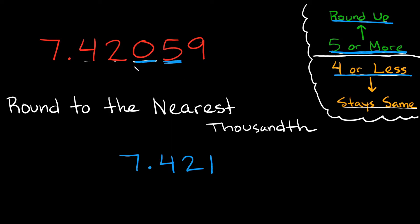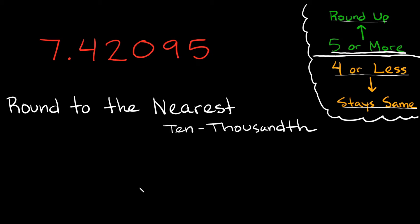We drop whatever comes after the thousandths place, so we would drop the five and the nine. Now let's do one more example so you can see a special rule that happens with the number nine. I switched the two last numbers — the nine and the five — and you'll see why in a second. Our problem says round to the nearest ten-thousandth. Let's locate the ten-thousandths spot: this is the tenths, hundredths, thousandths, ten-thousandths.